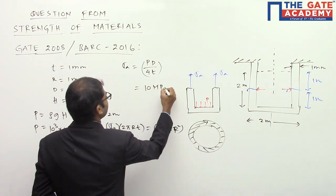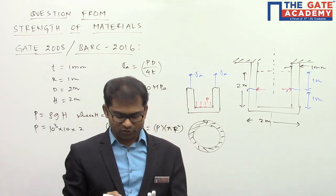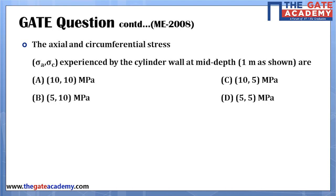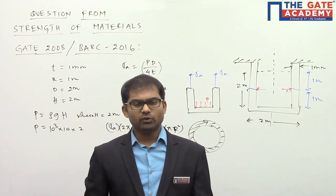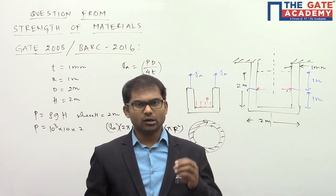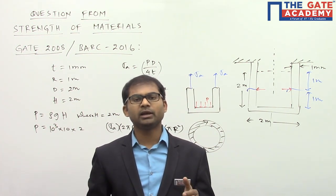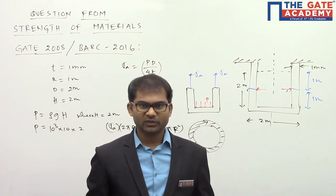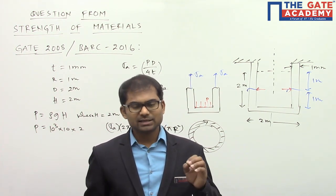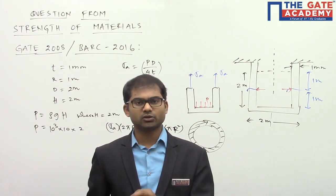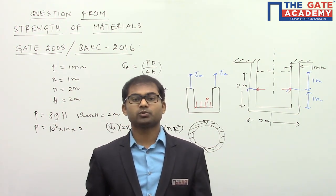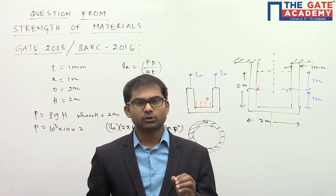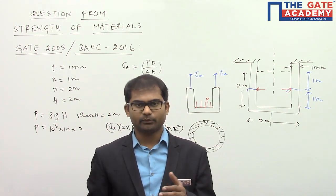Substituting the values, σa also comes out to be 10 MPa. So the answer to this question is option A: σa = 10 MPa and σc = 10 MPa. In many question banks the mistake made was assuming that axial stress is always half the circumferential stress — that is absolutely wrong. This is why the question was asked again in BARC 2016, and only those who identified this mistake got the correct answer.